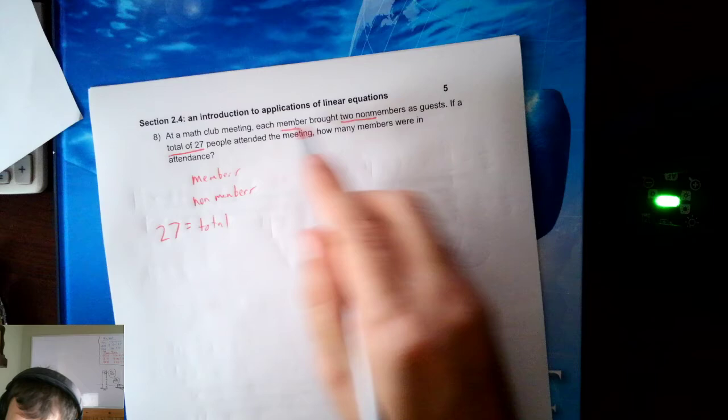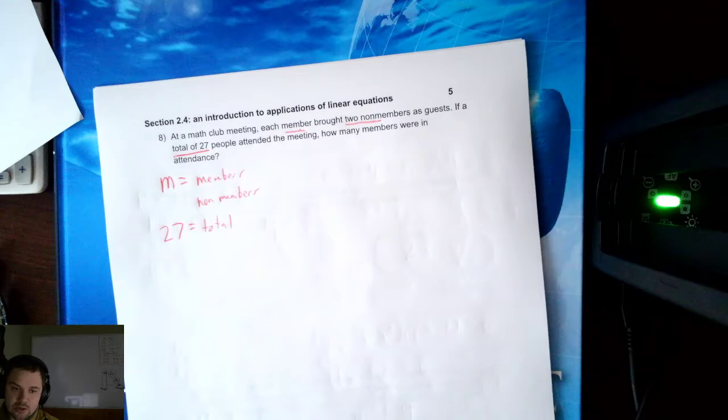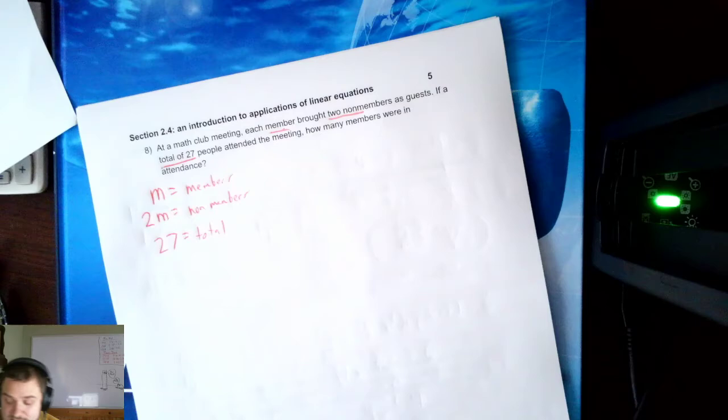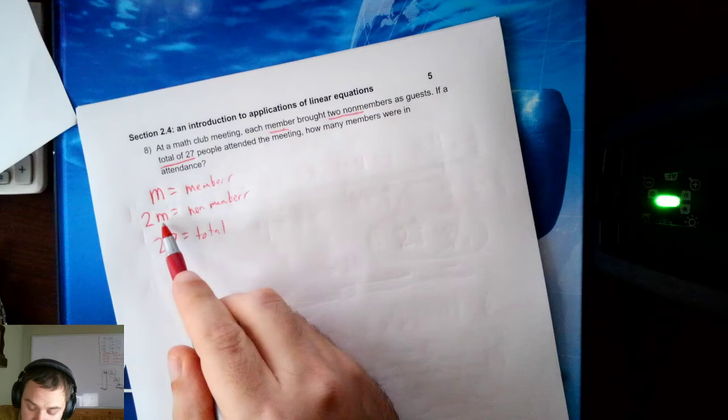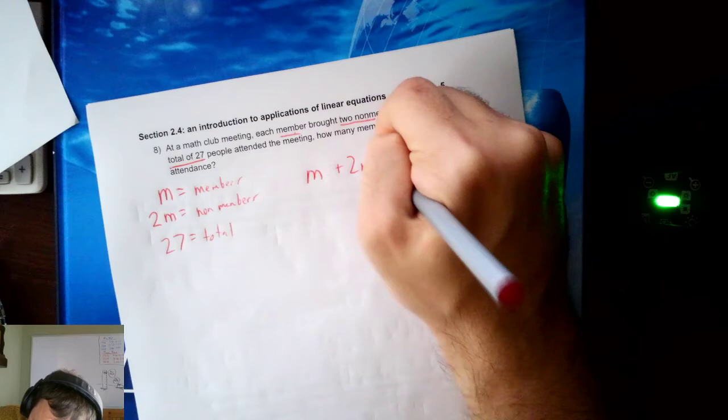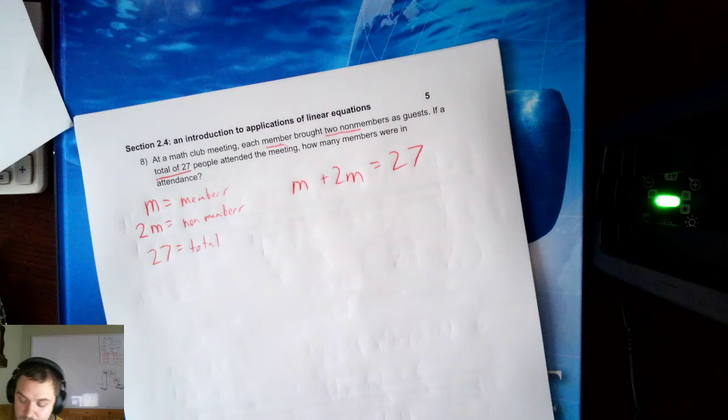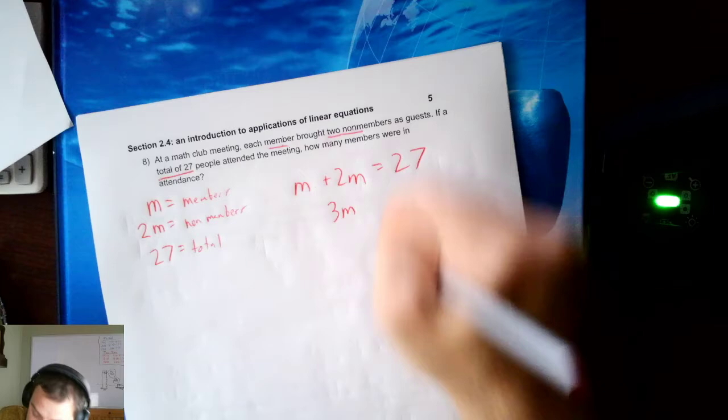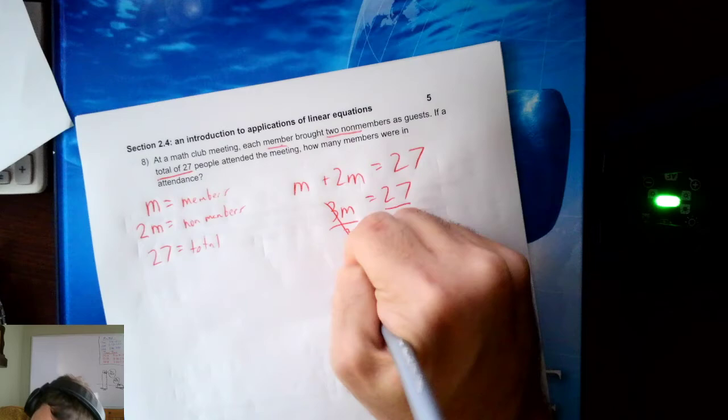So I'm going to let M be my members. Then, if each member brought 2 guests, there would be twice as many non-members. For each member, there was 2 guests. And now, I'm ready to look at the members plus the non-members should give me the total people in attendance. Members plus non-members gives me M plus 2M is 3M equals 27. And then we'll divide by 3 to find that M is equal to 9. So there were 9 members.